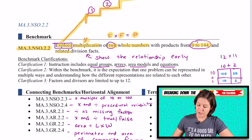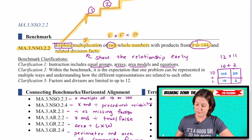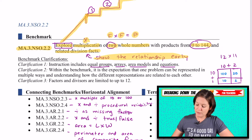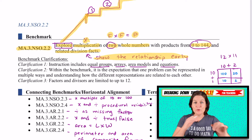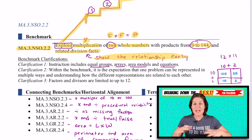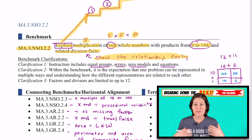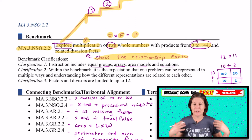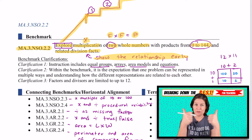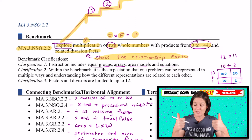So we are raising the bar for this standard. You also need to know the related division facts. I made a note: show that relationship early — that multiplication and division are inverse operations. They're related, they're connected, they are super duper groovy.